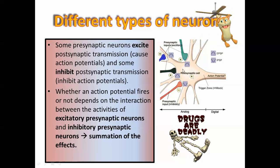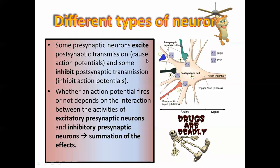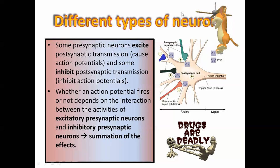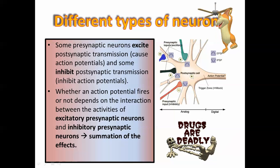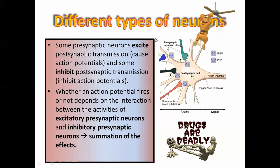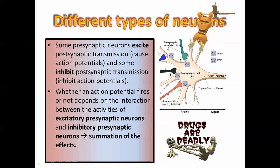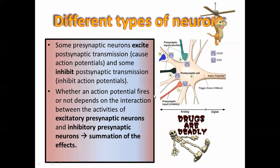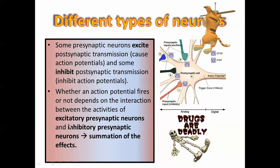Whether or not a neuron actually fires depends on the total amount of messages it receives. If it receives more positive messages than negative messages, that will override the negative messages and it will actually fire. If it receives more inhibitory messages versus excitatory messages, it will prevent itself from firing. So whether an action potential fires or not depends on the summation of the effects of these two types of presynaptic neurons — excitatory and inhibitory.